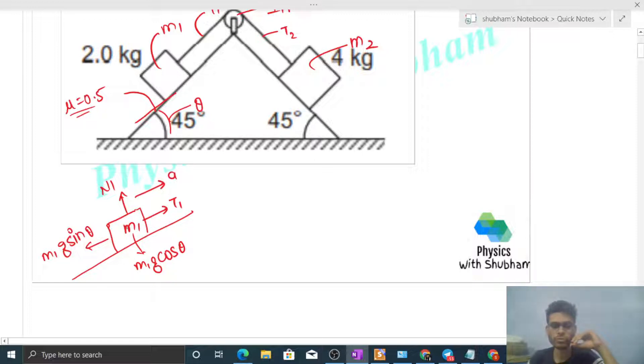Friction force acts on this block in the backward direction to oppose the relative motion. It will be limiting friction because relative motion is occurring between block and plane. Limiting friction is N times mu. So N1 value will be M1 G cos theta. N1 is M1 G cos theta - that is the value of normal reaction times mu. This much force acts backwards.